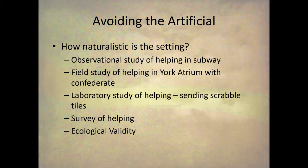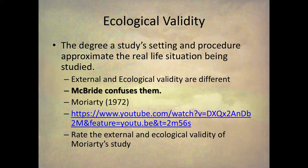Finally, a helping study done via survey, where you circle numbers on a piece of paper in response to questions, is a very artificial way of observing behavior. You're not really observing actual helping behavior — you're observing the behavior of circling numbers on a page. So ranked from most to least ecologically valid are: the subway observation, the atrium confederate study, the Scrabble lab study, and the survey. The official definition: ecological validity is the degree to which a study's setting and procedure approximate real-life situations being studied. External and ecological validity are very different — unfortunately, McBride's textbook confuses them.